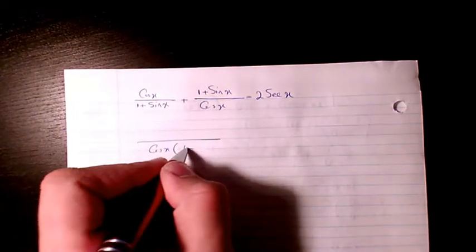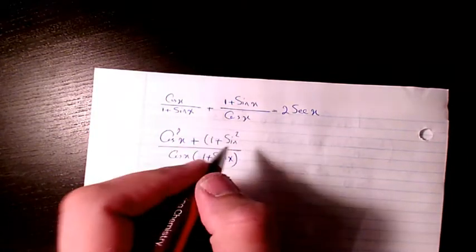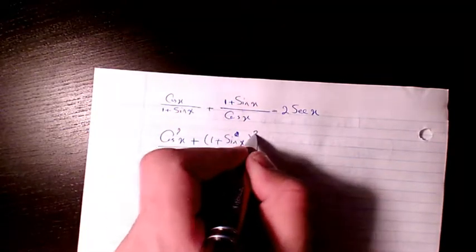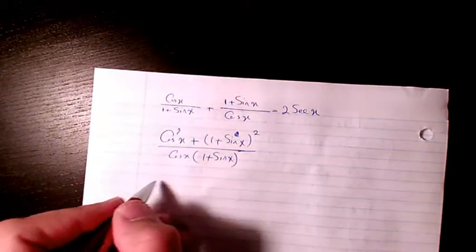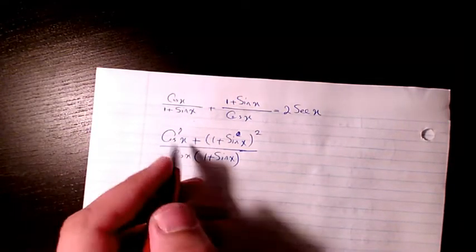So I will have a common denominator. So the cosine times 1 plus sine is going to be cosine squared x, and here we will have 1 plus sine squared x.